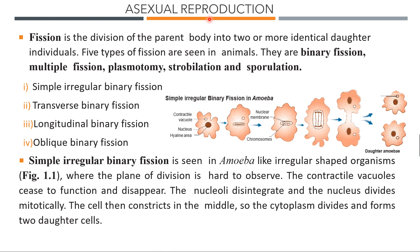Asexual reproduction — the first type is fission. There are five types of fission. Fission is the division of the parent body into two or many identical daughter individuals. The five types are: binary fission, multiple fission, plasmotomy, strobilation, and sporulation. We are going to recall some examples for each of these.